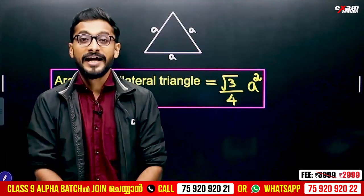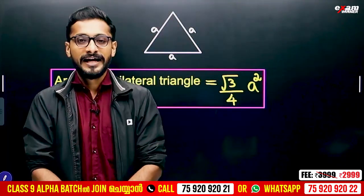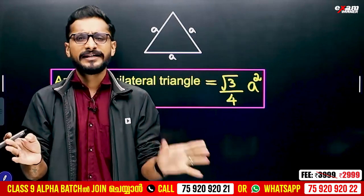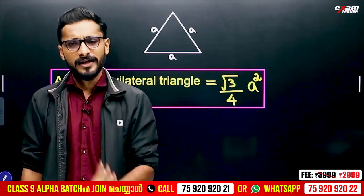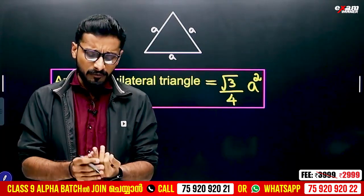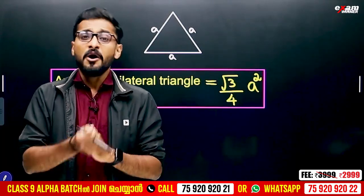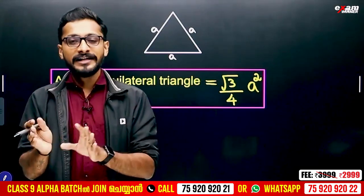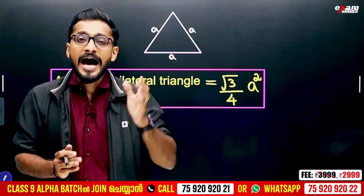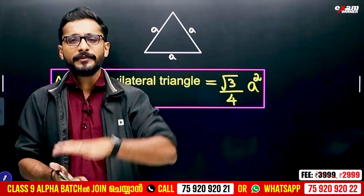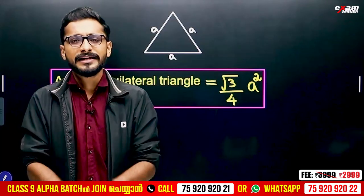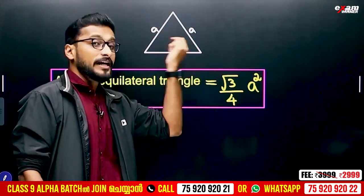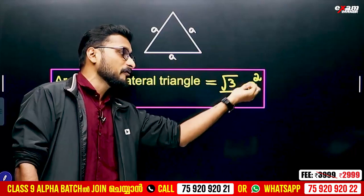Heron's formula and the triangle area — a very good idea. You can see three equations: half B into H, we can see half B into H. Equilateral triangle: we can see root 3 by 4 S squared.